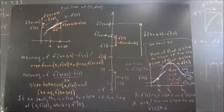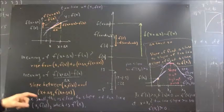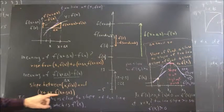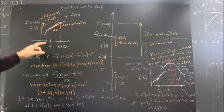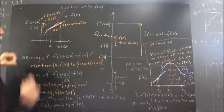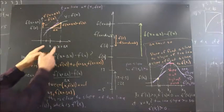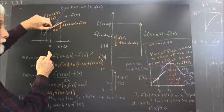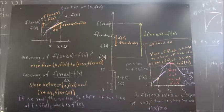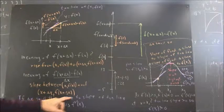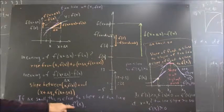F of x plus delta x minus f of x is the rise. Delta x is the run. So the meaning of f of x plus delta x minus f of x over delta x is the slope between (x, f of x) and (x plus delta x, f of x plus delta x). If delta x is small, this quotient is close to the slope of the tangent line at (x, f of x), and that slope is f prime of x.